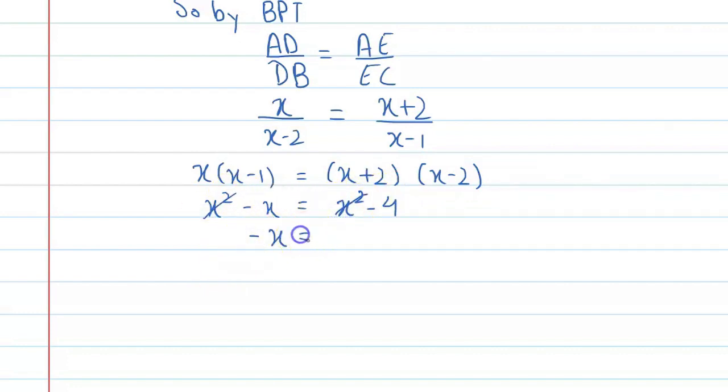This x square and x square will cancel. You will get minus x is equal to minus 4. x is equal to 4. Here you will see your final answer. Therefore, value of x is 4 and the correct option is B.